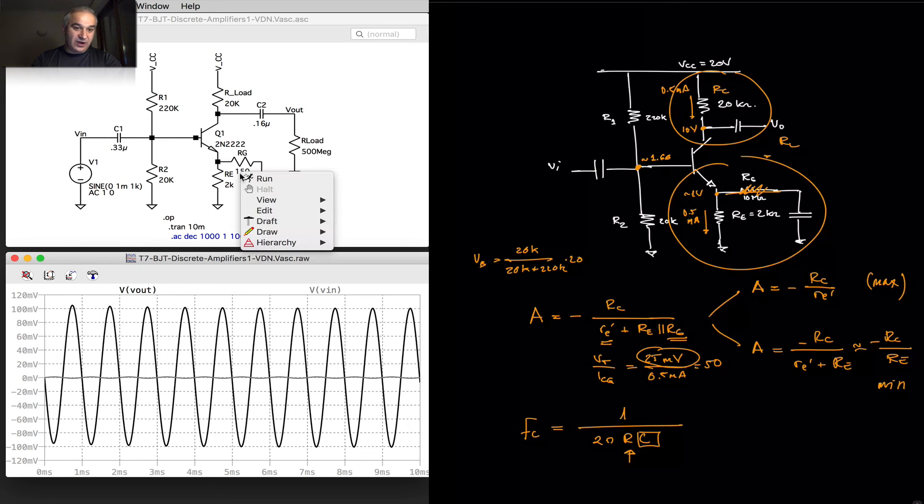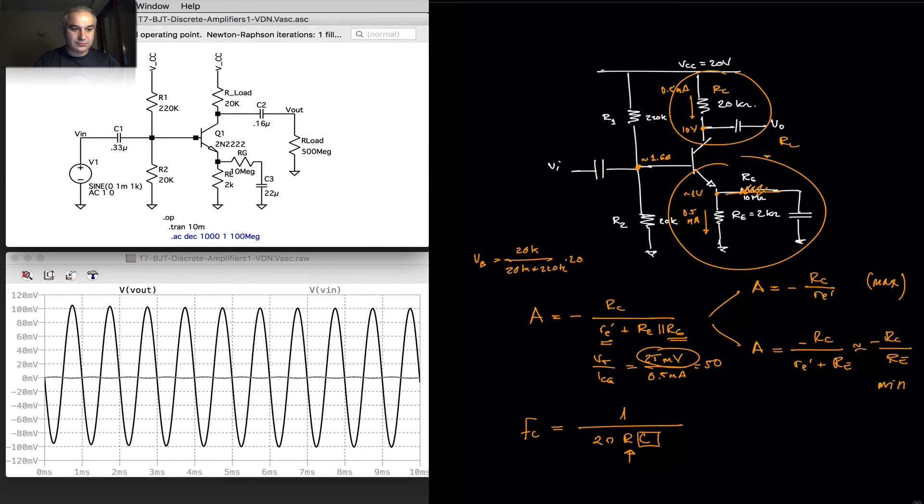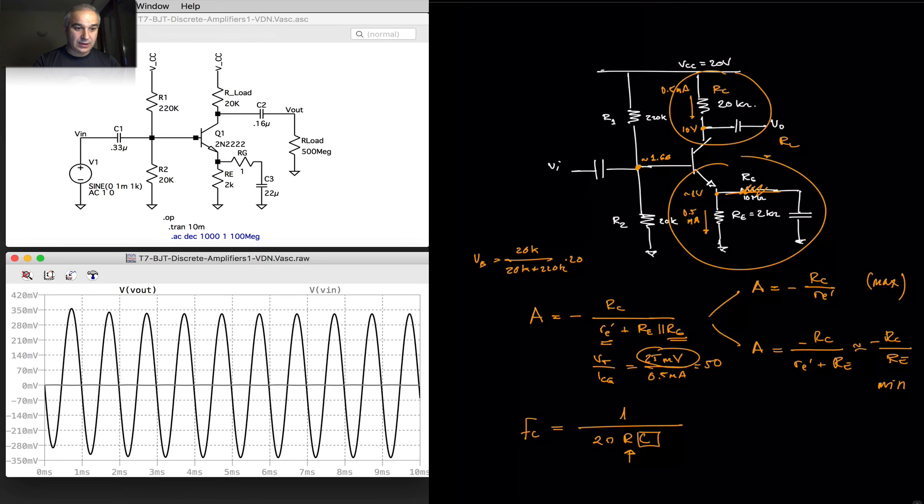And this will work for anyone that we decide. So, if we, I mean, this RG is going to control the gain. If we make it very large, we go back to a gain of 10. If we make it very small, like one ohm, so we are bypassing our Re, it is going to be a gain of 390 something. That's the maximum gain.